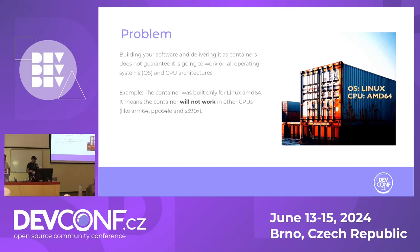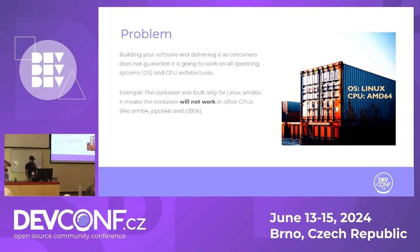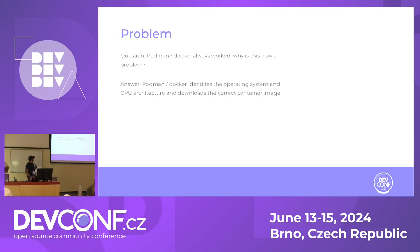For example, in this picture, the container was built only for Linux AMD64. It means that the container will not work on other CPUs, like ARM64, or PPC64, and others. So how do we solve it? Probably the first question that comes to mind is: I always use Podman or Docker, I never saw this problem — it always worked. Why is this now a problem?